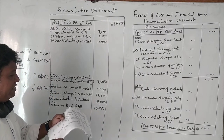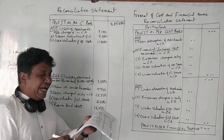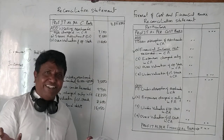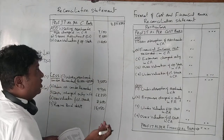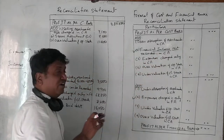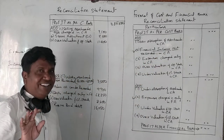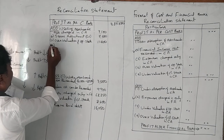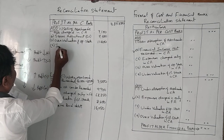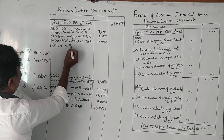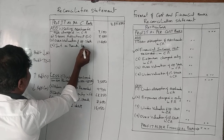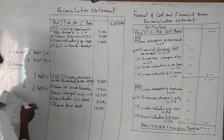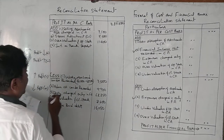Next is interest on bank deposit received. 'Received' means it is an income. Any income which is not recorded in cost accounting — since cost accounting records no incomes — we write it here as an addition. Interest on bank deposits: 16,750 rupees to be added.